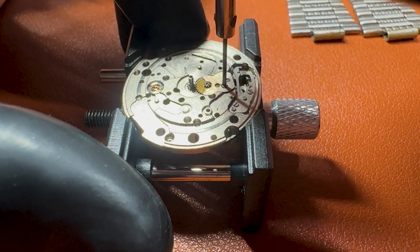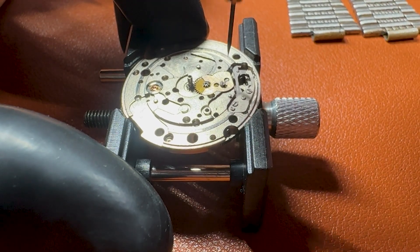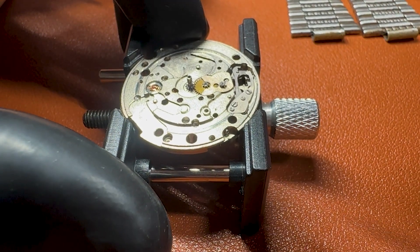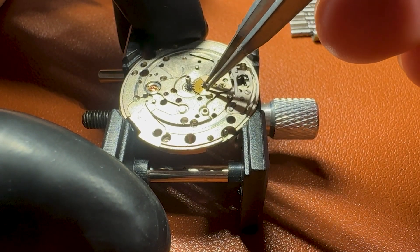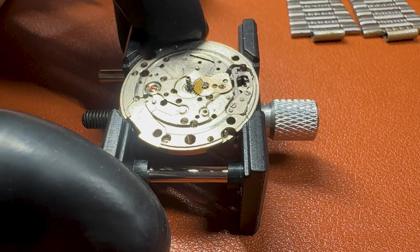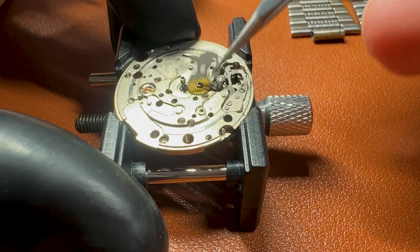This is another spring. Again it is used for the date. It keeps the date dial fixed. Here we have another small plate and under this plate we have some wheels for the adjustment of the time.